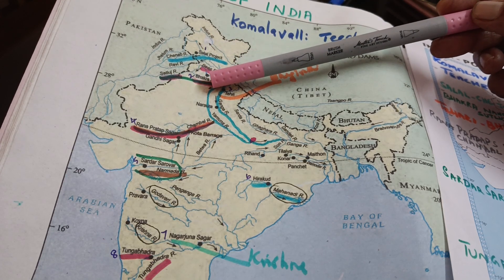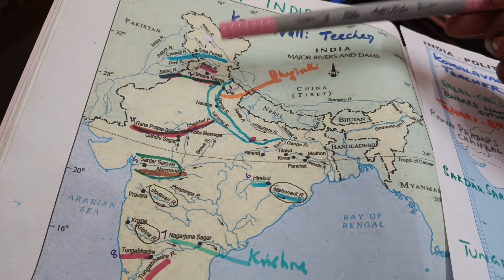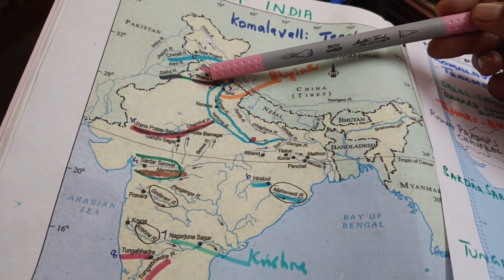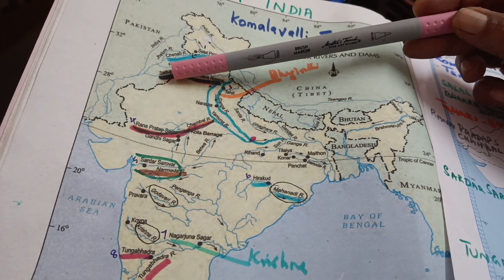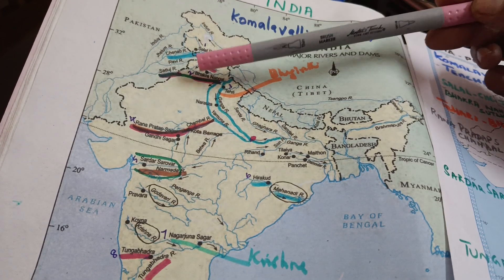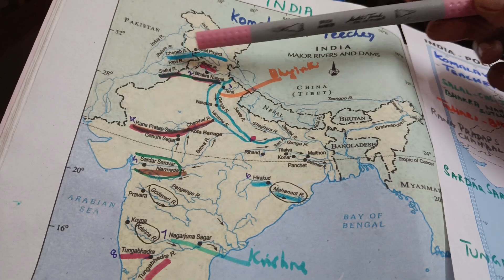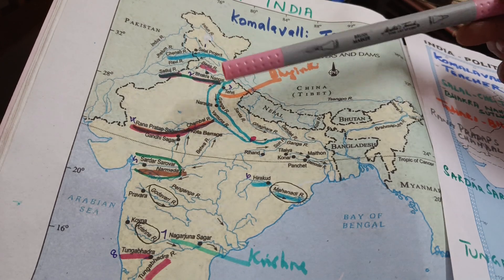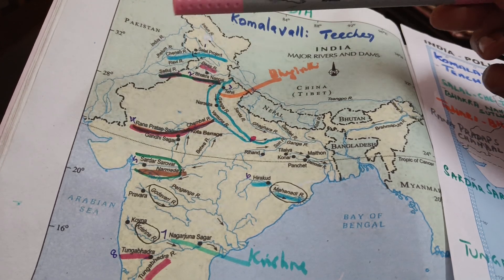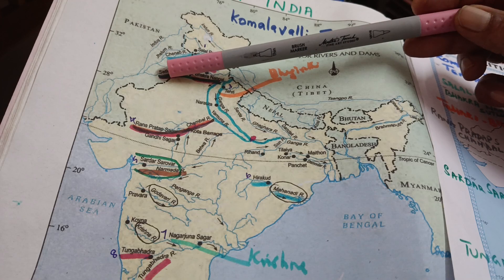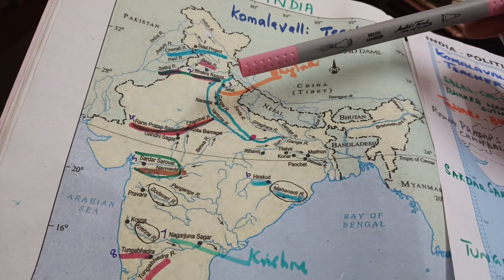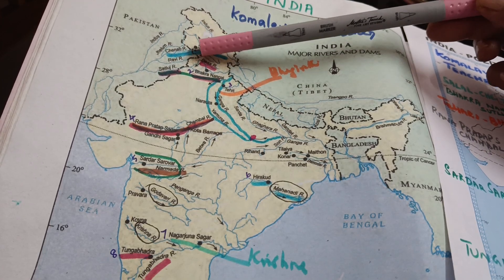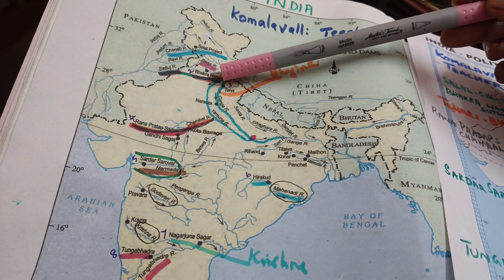Then moving a little more south, you reach Bhakra Nangal Dam, which is on the Sutlej river. The Beas river also comes — Sutlej river and Beas, as written in the textbook. So Bhakra Nangal is on the Sutlej, and that comes under Himachal Pradesh.